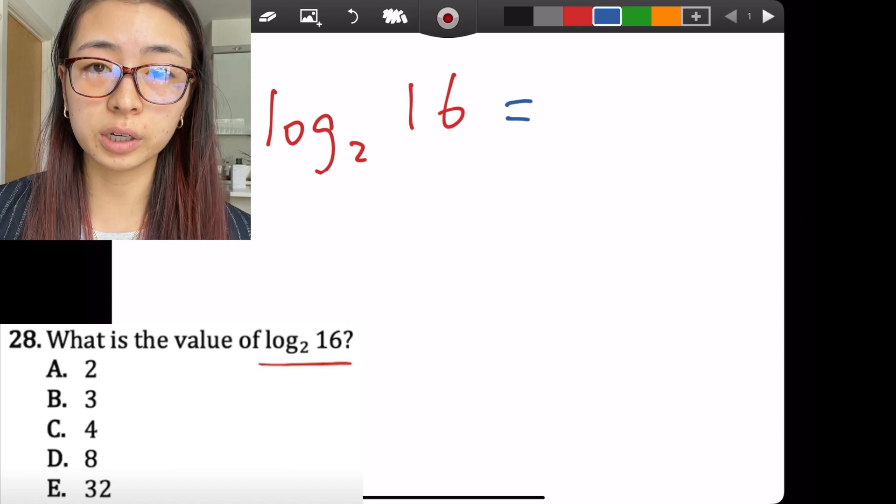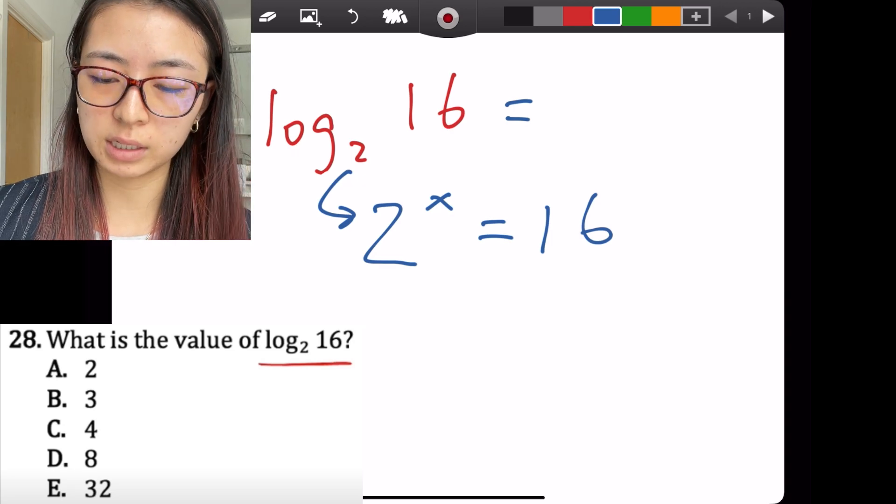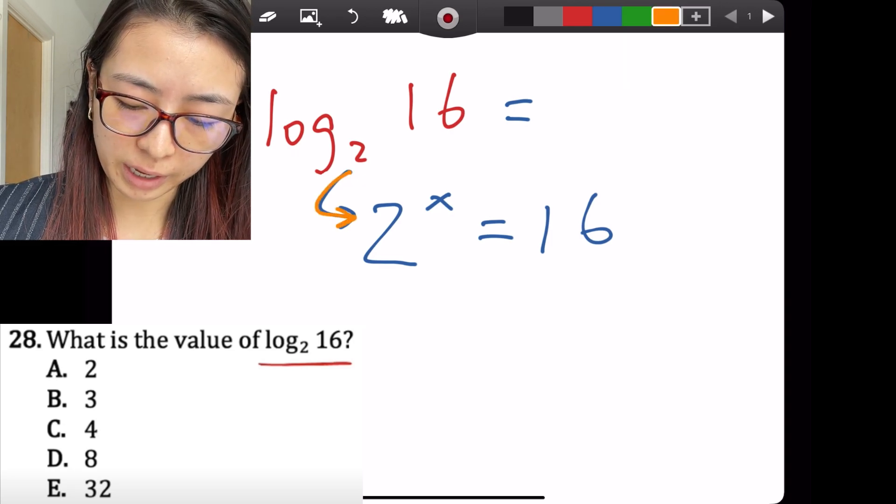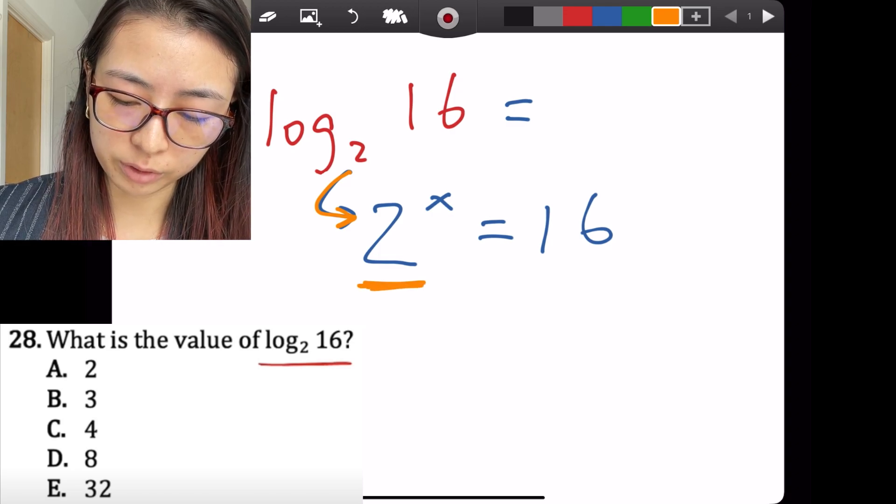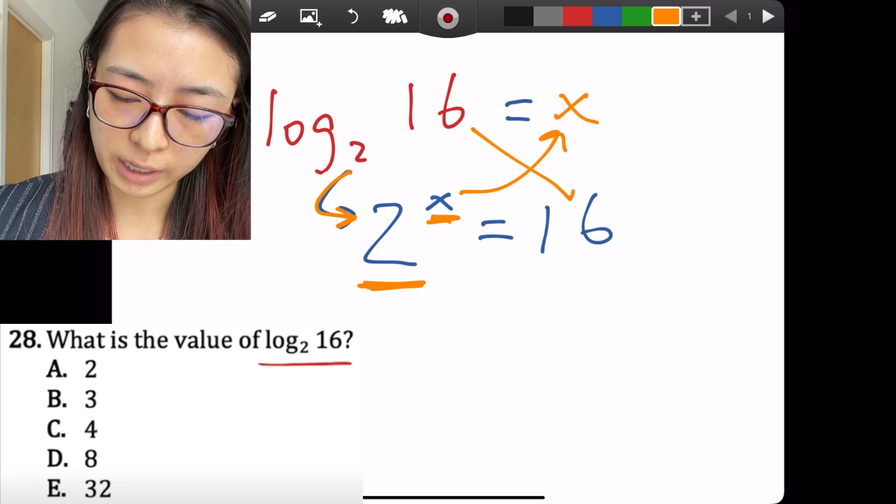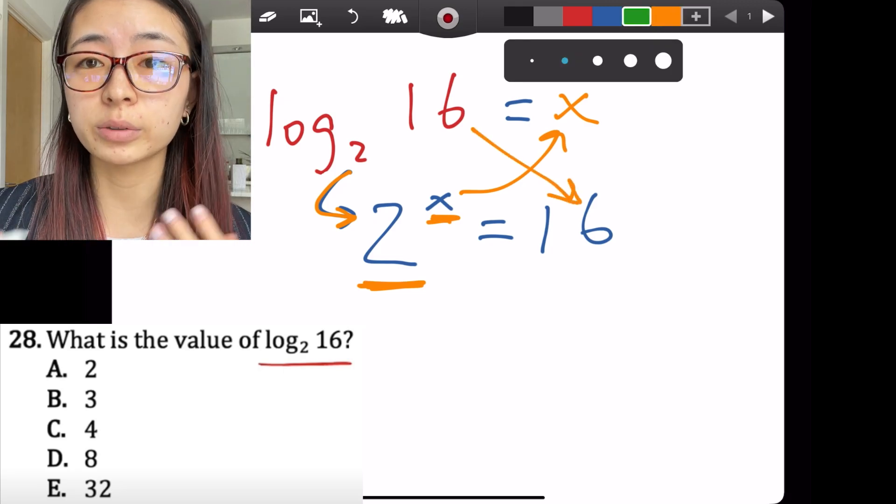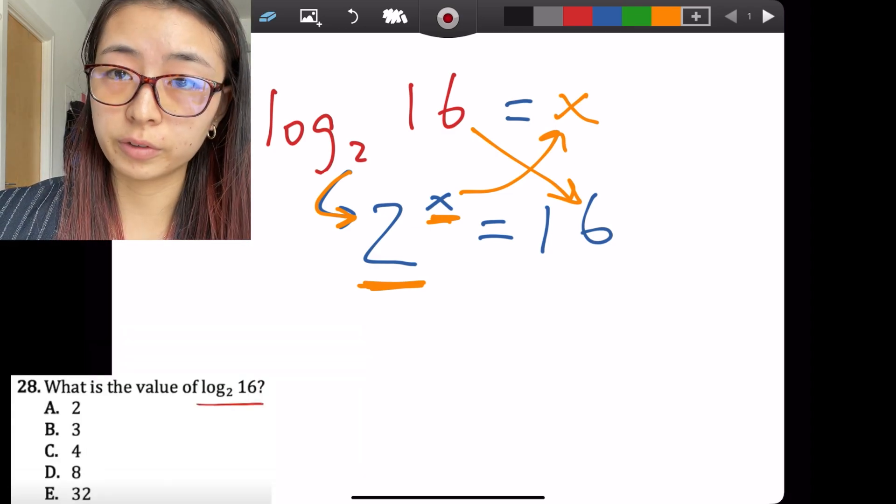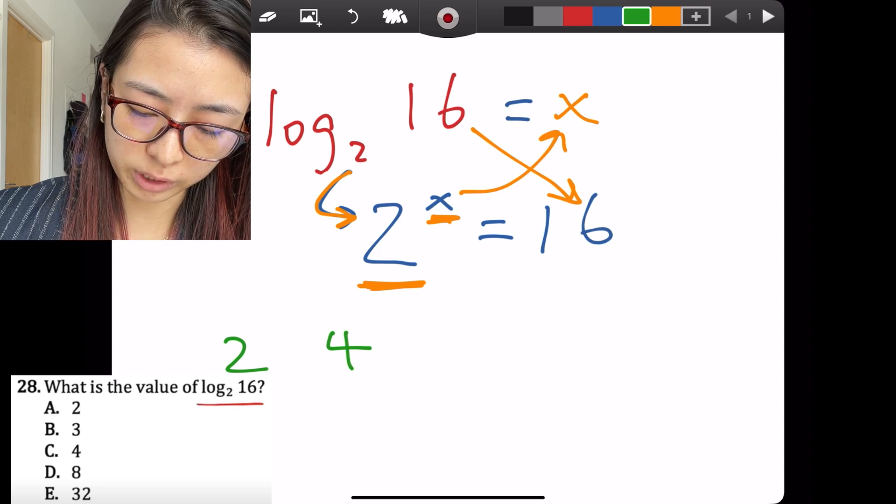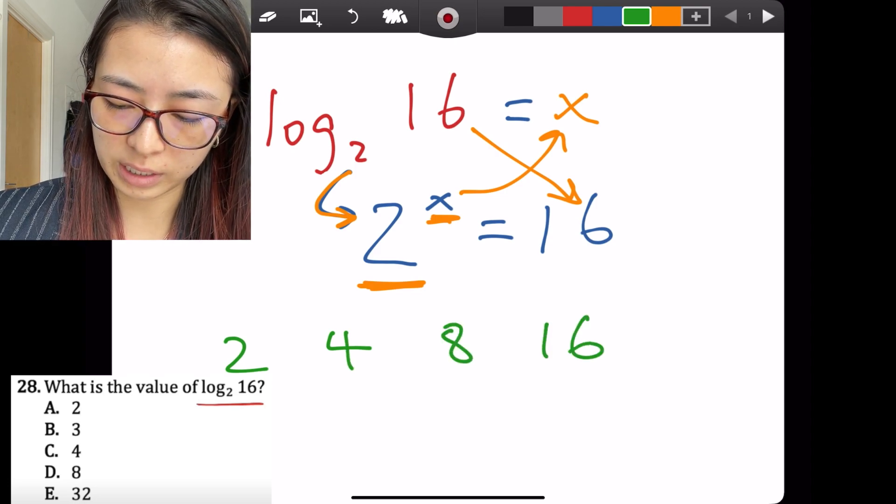This means 2 to what power equals 16. So as you see here, you just put this bottom number as whatever number it's raised to the power of x, which is what you're trying to find, that equals 16. Then you just see 2 to what power equals 16. So 2 to the first power is 2, 2 squared is 4, 2 to the third power is 8, 2 to the fourth is 16. So your answer is 4 because 2 to the fourth power equals 16.